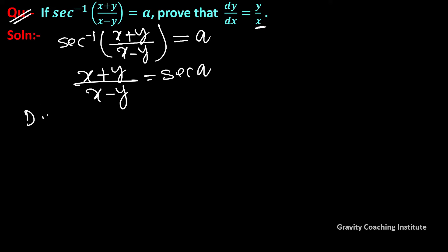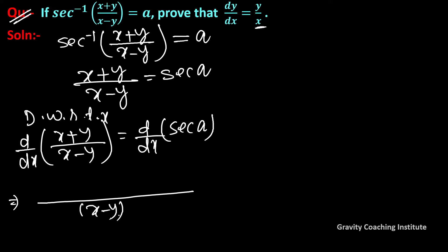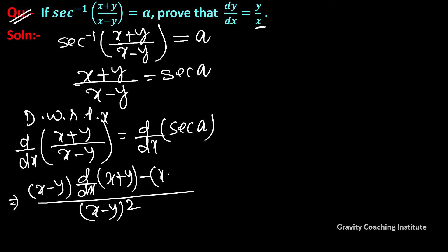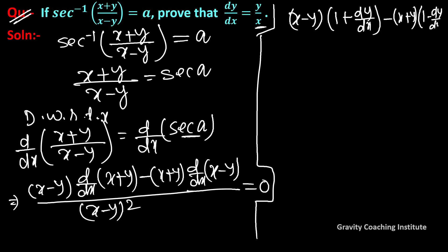Now differentiate with respect to x. Using the quotient rule on (x plus y) upon (x minus y): the derivative gives (x minus y) whole square in the denominator, with (x minus y) into differentiation of (x plus y) minus (x plus y) into differentiation of (x minus y) equal to 0. So (x minus y) times (1 plus dy upon dx) minus (x plus y) times (1 minus dy upon dx) upon (x minus y) whole square equals 0.